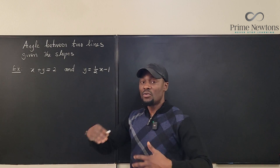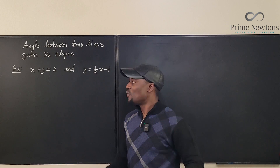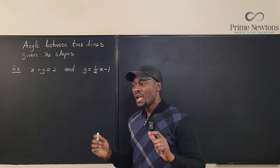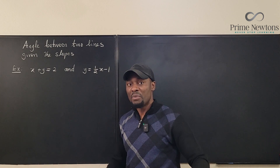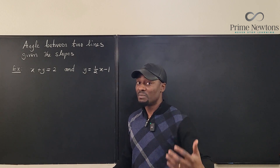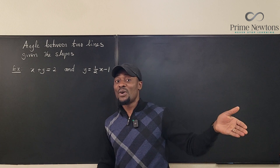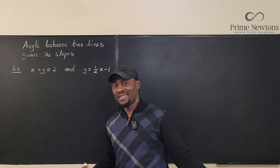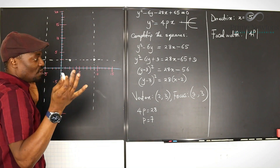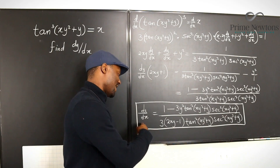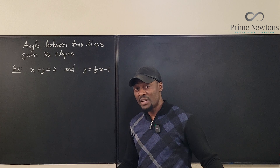If you have two lines on a graph you can easily use a protractor and find the angle between them. But say you're just given the equations — how would you know the angle? Rather than just writing the formula, I'm going to show you how the formula is obtained, and then we're going to solve this.